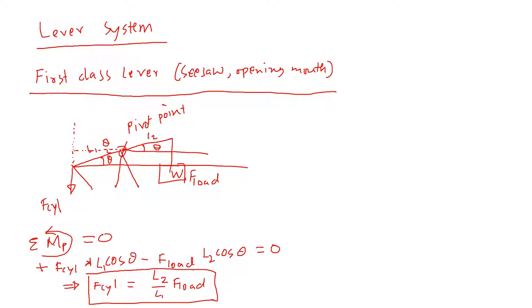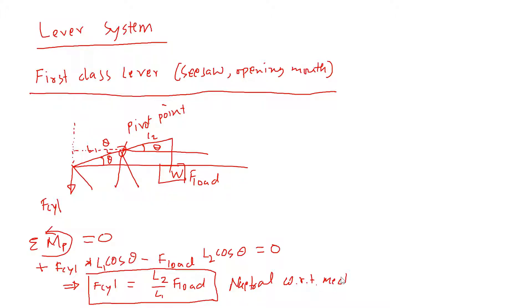The first-class lever is neutral in terms of mechanical advantage. If both lengths L1 and L2 are the same, they don't provide any advantage, so we call it neutral with respect to mechanical advantage.